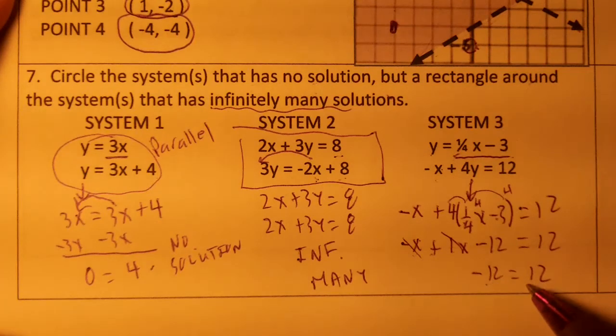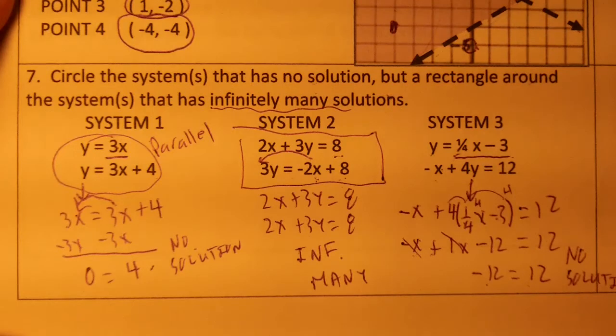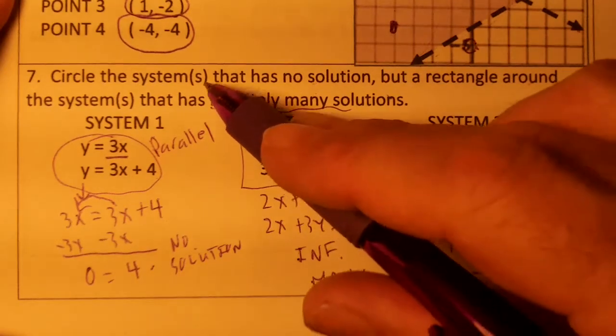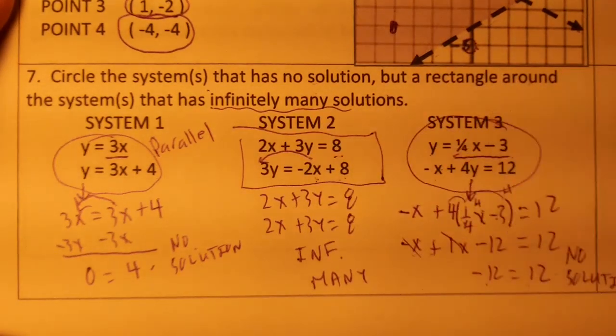Is negative 12 equal 12? No. So there is no solution. So if there's no solution, these lines would actually end up being parallel, which would be circling it because they have no solution.